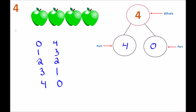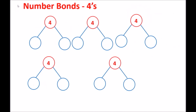So for the number four, we came up with five different ways to do the number bonds. Let's write these down as separate number bonds with the four as the whole. We know we have a zero and a four. Then we have the number one and the number three. The next number bond is a two and another two on the right side. Then we have the number three and the number one. And the last number bond, we have the number four and the number zero. Five number bonds that make up the number four.